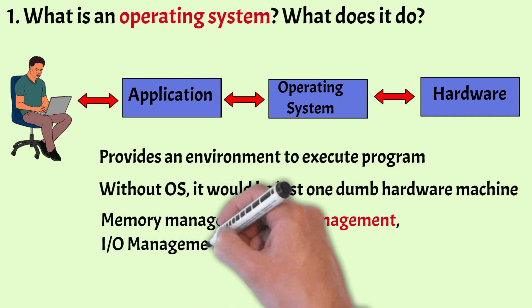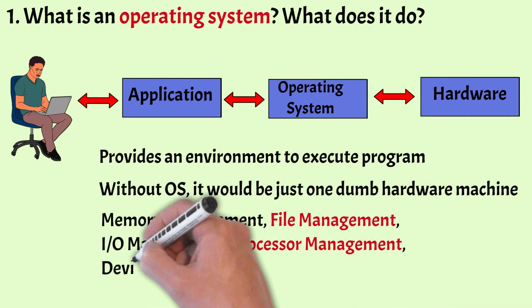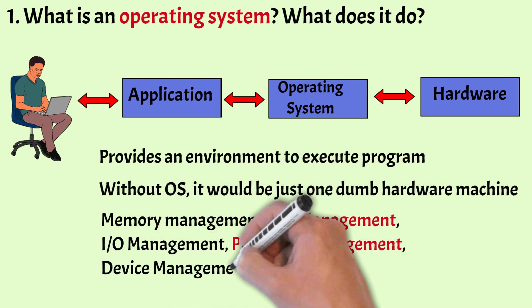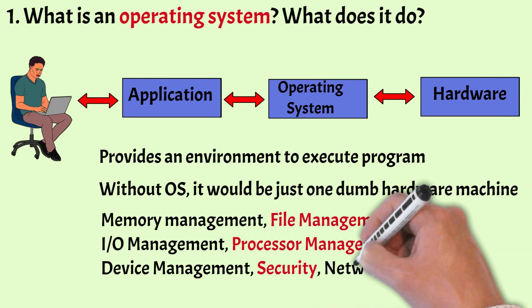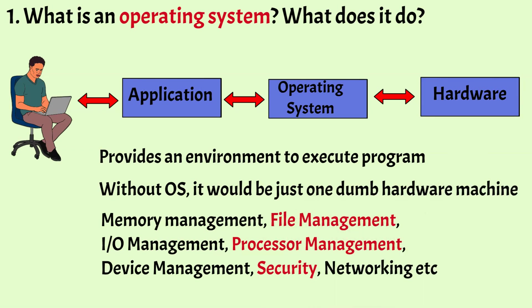Without an operating system it would be just one dumb hardware machine. The main functions of an operating system are memory management, file management, I/O management, processor management, device management, security, networking, etc.